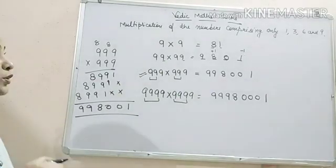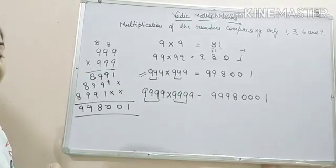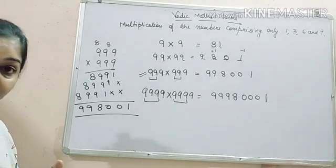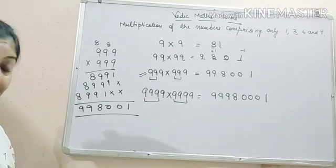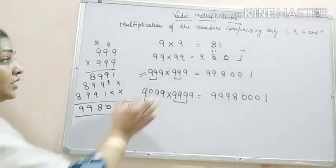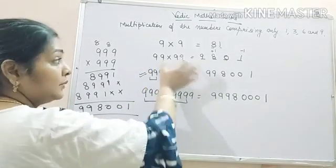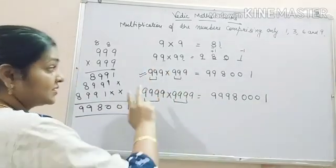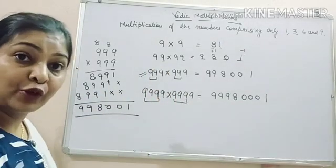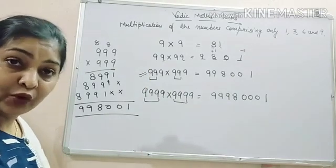So now it is clear how to multiply the numbers comprising only of 1, 3, 6, and 9. But what we have done? We have taken same numbers. Either we have multiplied 2 nines with 2 nines, 3 nines with 3 nines, 4 nines with 4 nines.